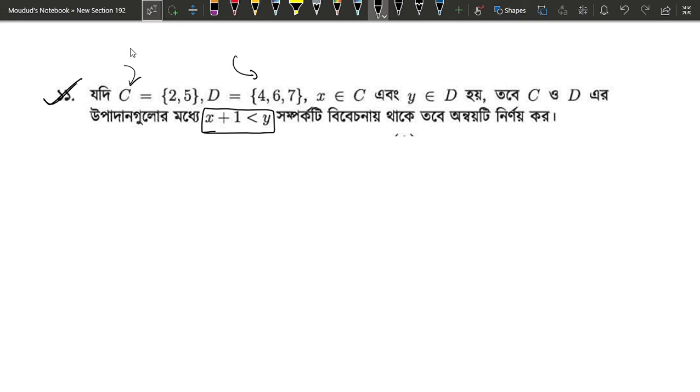So C is {2, 5} and D is {4, 6, 7}. Okay, we will do C × D.